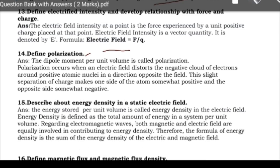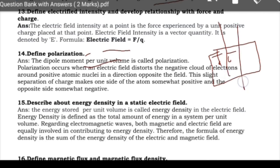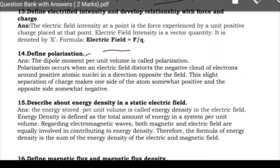Polarization: the dipole moment per unit volume is called polarization. When a dielectric material is subjected to an electric field E, the charges will be displaced and dipoles will be formed in the dielectric — this is called polarization. When polarization happens, there is distortion of the positive atomic nucleus, causing slight separation of charges, and dipole formation on the positive and negative sides.